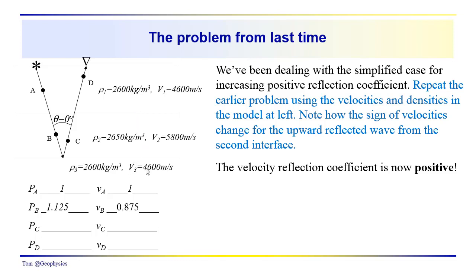As we go from layer two to layer three, we have a reduction in velocity back to the velocity in layer one, and also a reduction in density back to the density in layer one. So we basically flip the sign of the reflection coefficients. This gives us a negative pressure wave reflection coefficient. Remember the relationship between the velocity reflection coefficient and the pressure reflection coefficient — the velocity wave reflection coefficient is the negative of the pressure wave reflection coefficient.